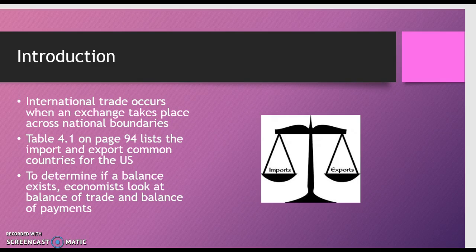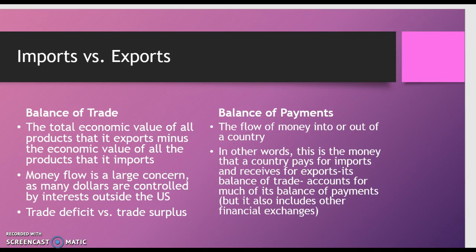Table 4.1 on page 94 lists the export and import common countries for the US. To determine if a balance exists, economists look at two factors: balance of trade and balance of payments. The balance of trade is the total economic value of all products that a country exports minus the economic value of all the products that it imports.